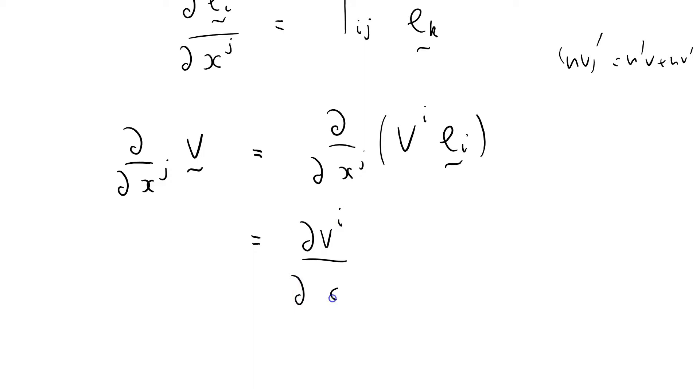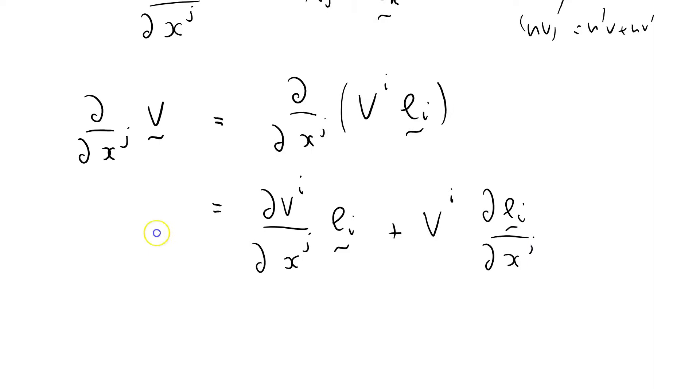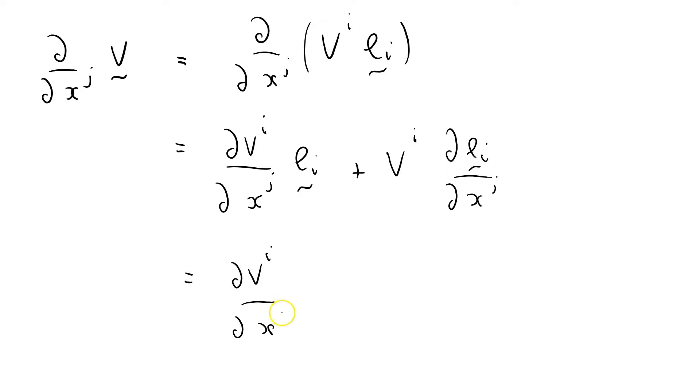dv^i/dx^j, and I've done this about four times and I've got it wrong each time. So I'm going to have to be a bit more careful here. d/dx^j v^i e_i. No, I've got a v there. Let's try that again. That's e_i. Plus v^i de_i/dx^j equals dv^i/dx^j.